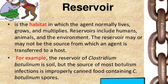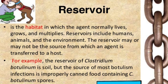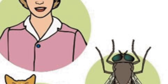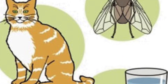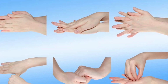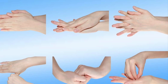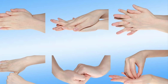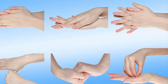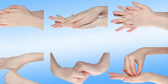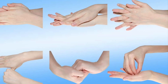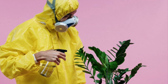The second link is the reservoir, in which the agent normally lives, grows, and multiplies. Reservoirs include humans, animals, and the environment. A reservoir may or may not be the source from which the agent is transferred to a host. We can break this chain by doing frequent hand washing. Hand hygiene is one of the most important interventions to reduce healthcare-associated infection. By following the 6-step technique, it will enable you to wash every part of your hands, and the longer you wash, the more germs will be killed. Just make sure to apply moisturizer after.